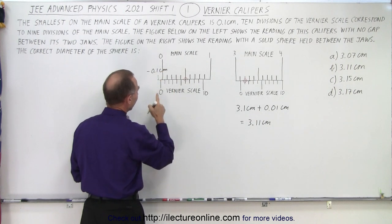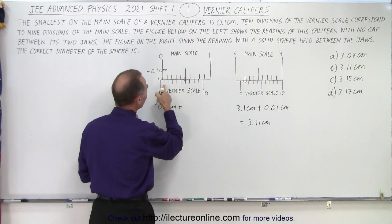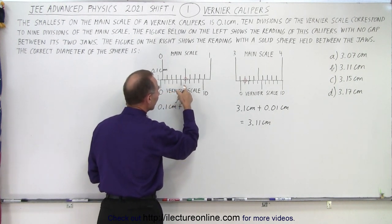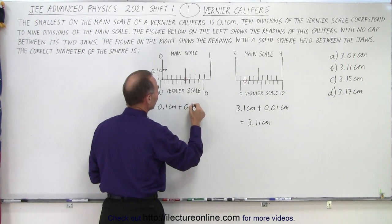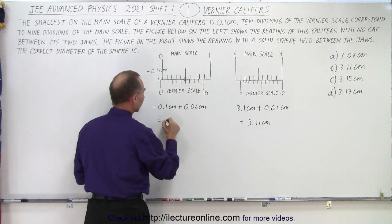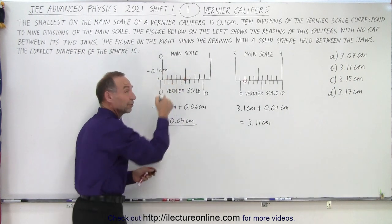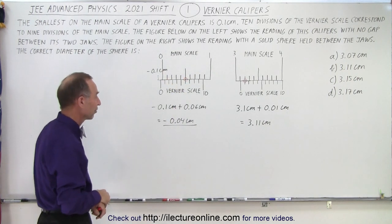So this would be centimeters like that. So it would be negative 0.1 centimeters plus, and notice it's the first second third fourth fifth sixth line to the right. So plus 0.06 centimeters from the vernier scale, which is equal to minus 0.04 centimeters, and this is what we call the adjustment of not having the zero reading correctly at zero.